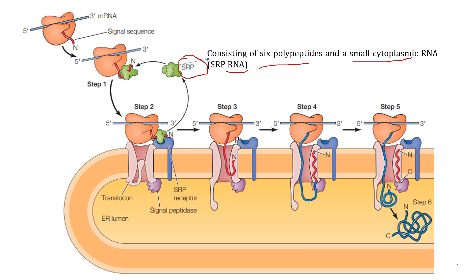The SRP binds to both the ribosome and the signal sequence, inhibiting further translation. This forms a complex of SRP, ribosome, mRNA, and the growing polypeptide chain. This complex is then targeted to the rough ER by binding to the SRP receptor present in the rough ER membrane. Once bound, GTP hydrolysis is triggered, releasing the SRP from both the ribosome and the signal sequence.